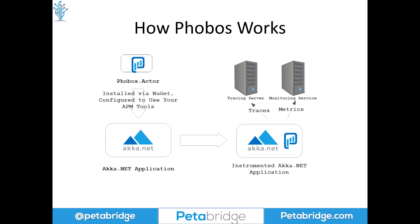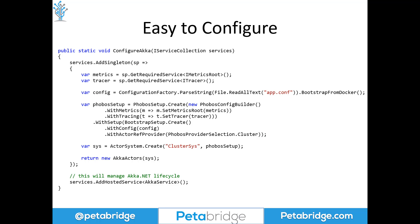Phobos will automatically export it to the tracing and monitoring services of your choice. This is an example of what an Akka.NET configuration using Phobos might look like. This is all part of Akka.NET 1.4 and later, where we use an actor system setup class to programmatically configure Akka.NET. We're bootstrapping an Akka.NET cluster inside an ASP.NET Core application using the Microsoft.Extensions.Hosting library, with dependency injection to resolve our tracer and metrics root. In this specific code sample, we're using Datadog for both metrics and tracing.